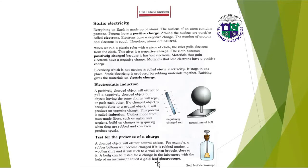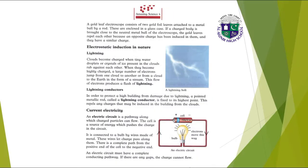A body can be tested for a charge in the laboratory with the help of an instrument called a gold leaf electroscope. Here we have a picture of a gold leaf electroscope. It consists of two gold foil leaves attached to a metal ball by a rod, enclosed in a glass case. If a charged body is brought close to the neutral metal ball, the gold leaves repel each other.